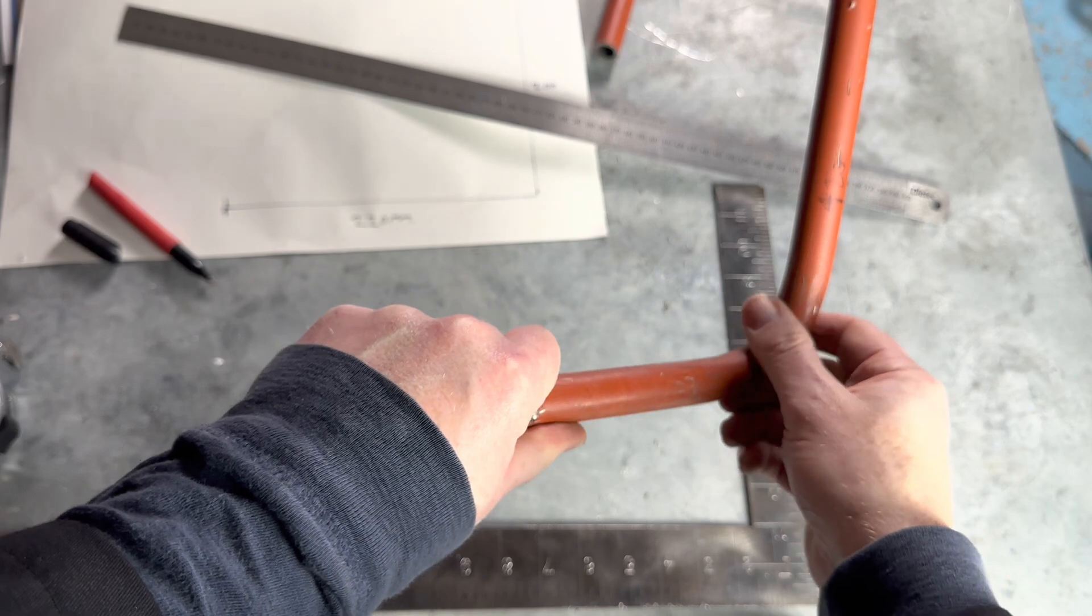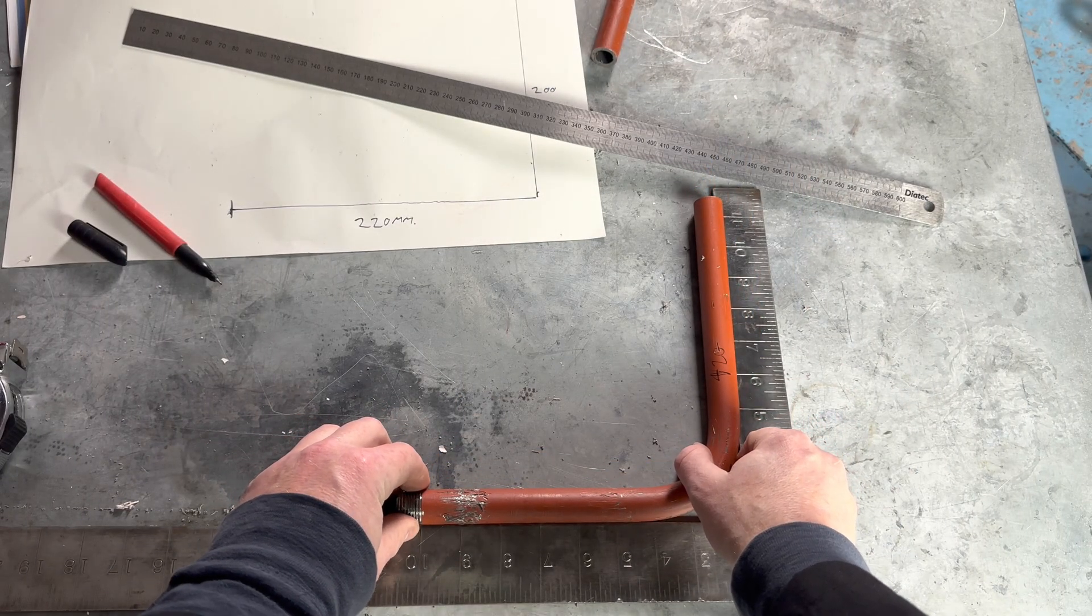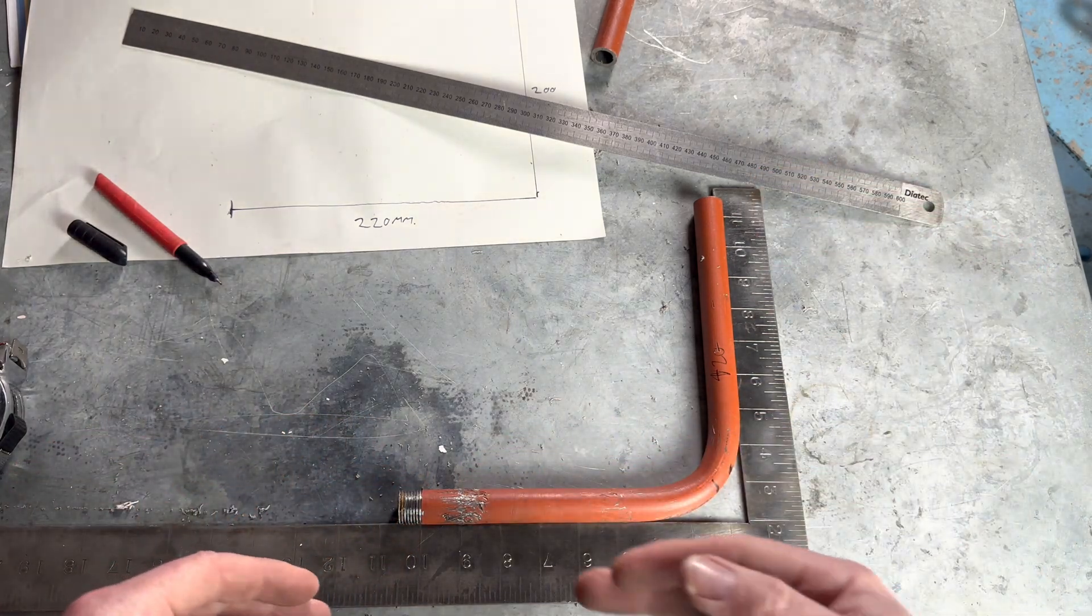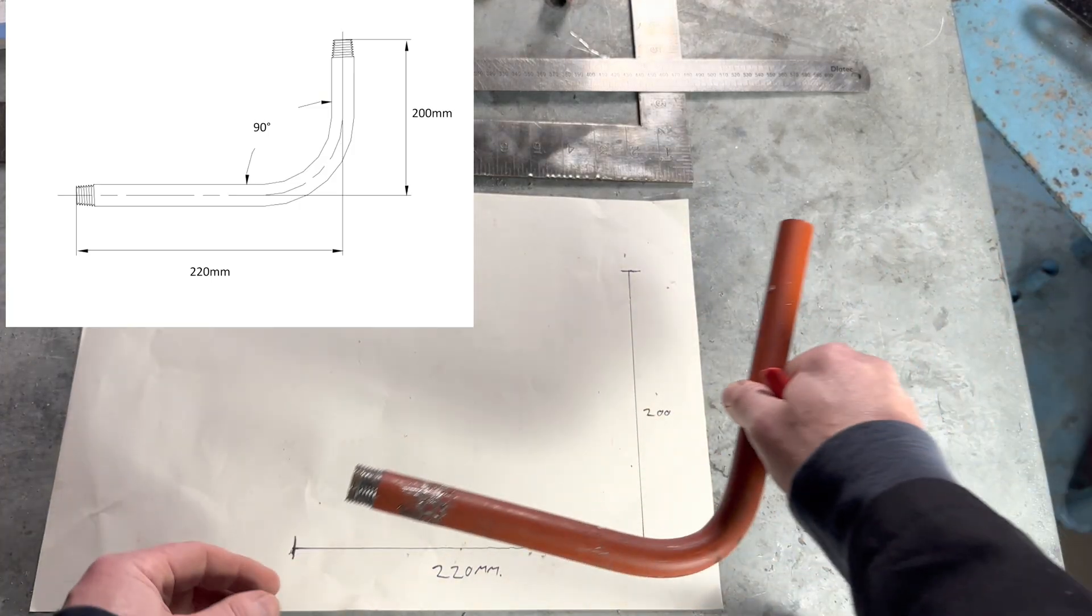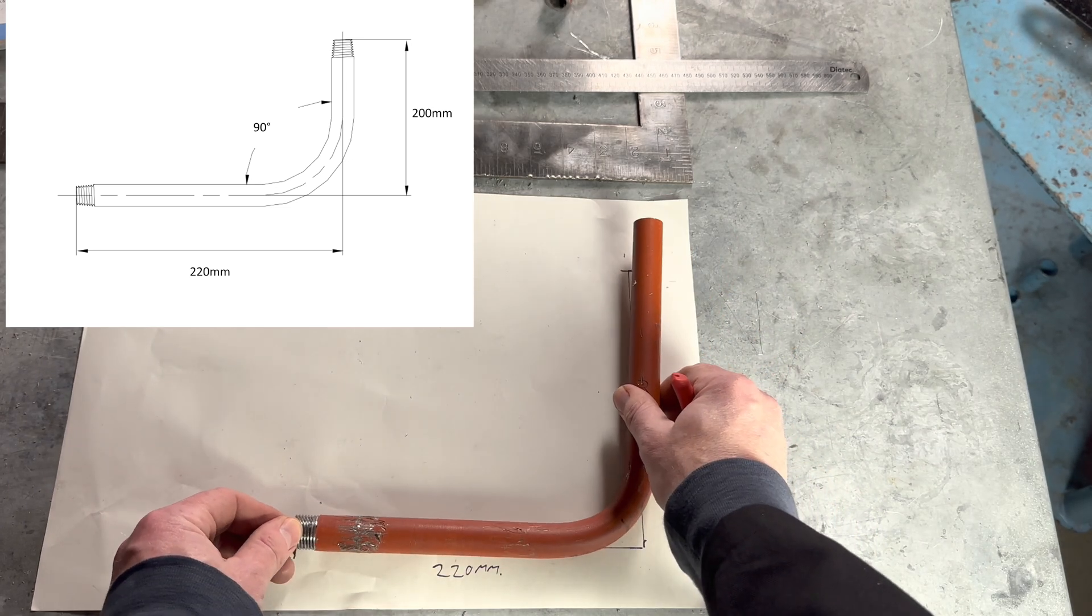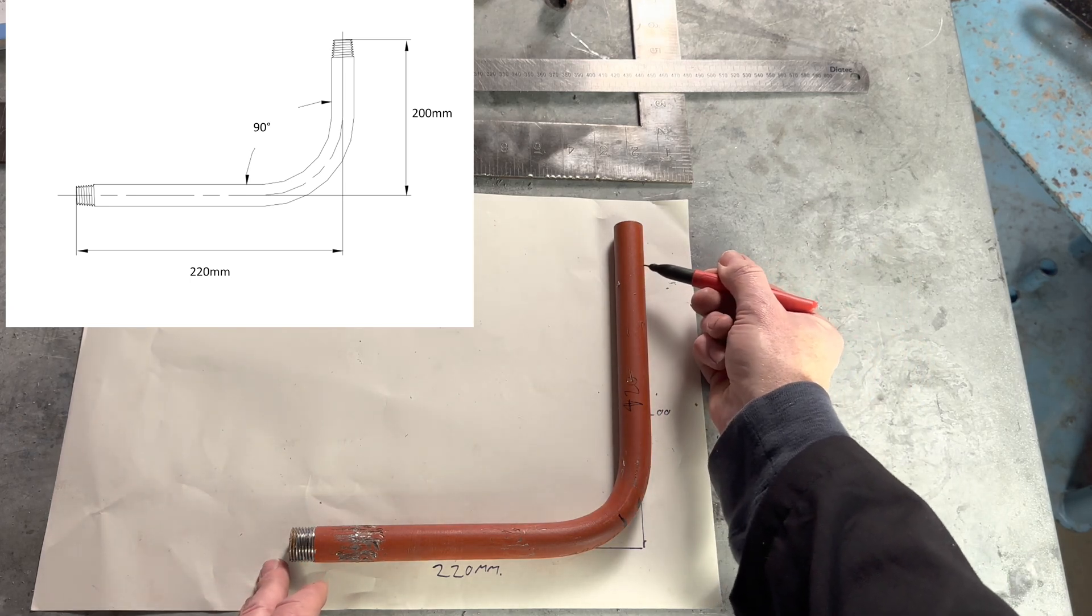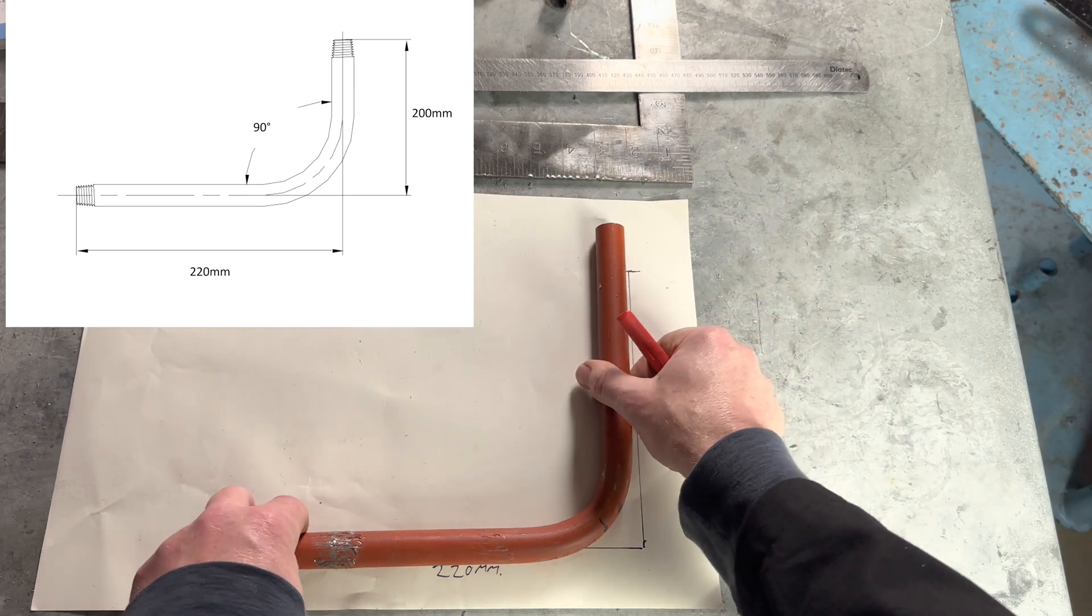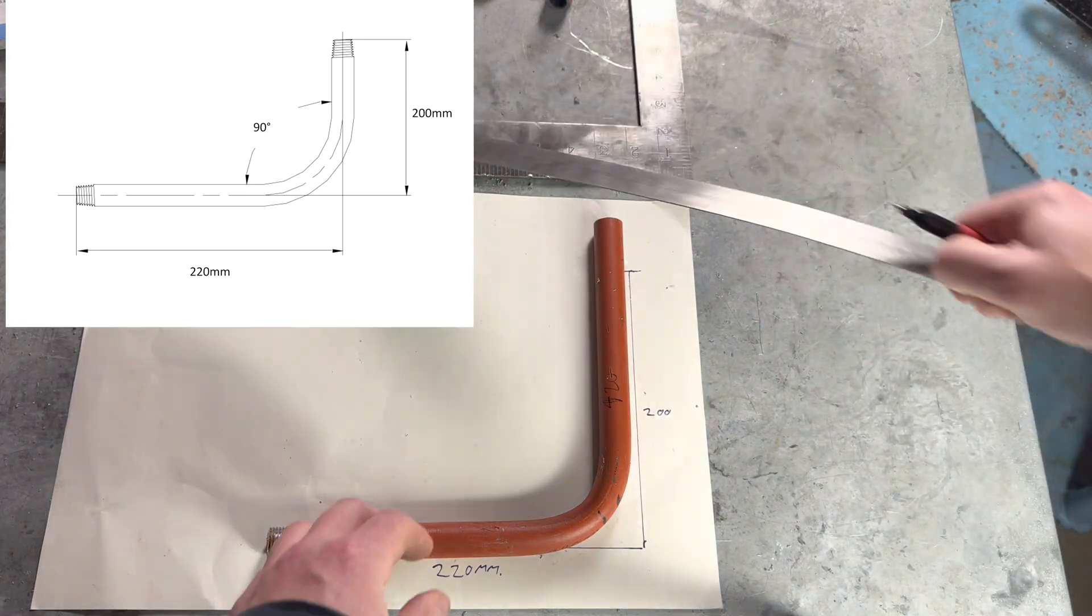We now put this onto our square to check that it's square, which it is. Just to show you what I mean, I'll line this up here - so 220 mil. When I put that there and that there, what you can actually see is the pipe is actually where it's cut the corner.